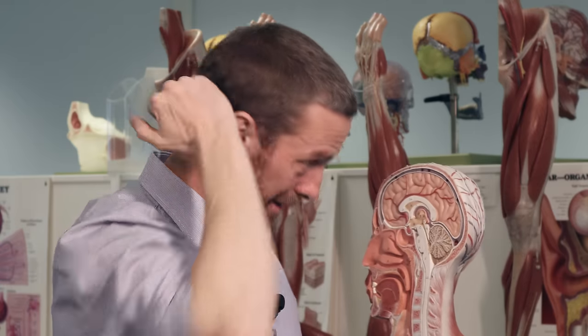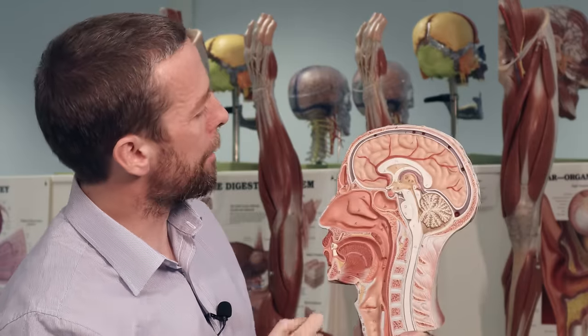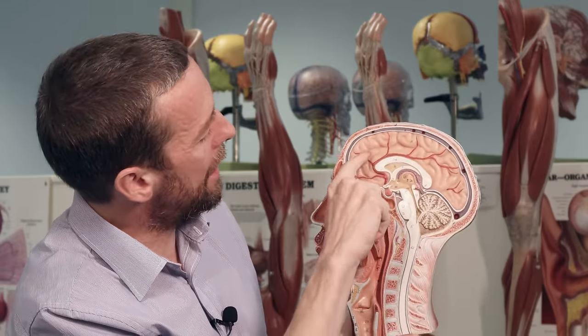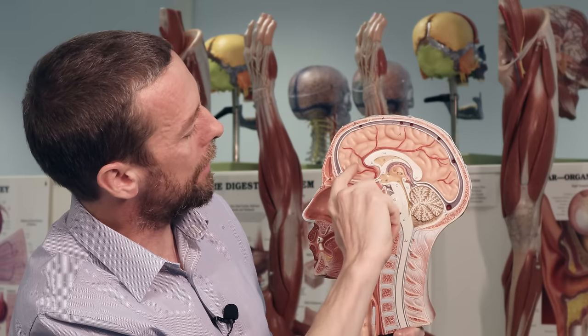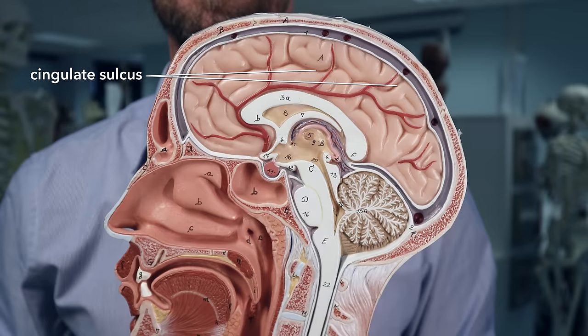The sulcus between the parietal lobe and the occipital lobe is called the parieto-occipital sulcus. The occipital lobe is deep to the occipital bone. The fourth major sulcus is the cingulate sulcus, visible here in this mid-sagittal section, running around in there.